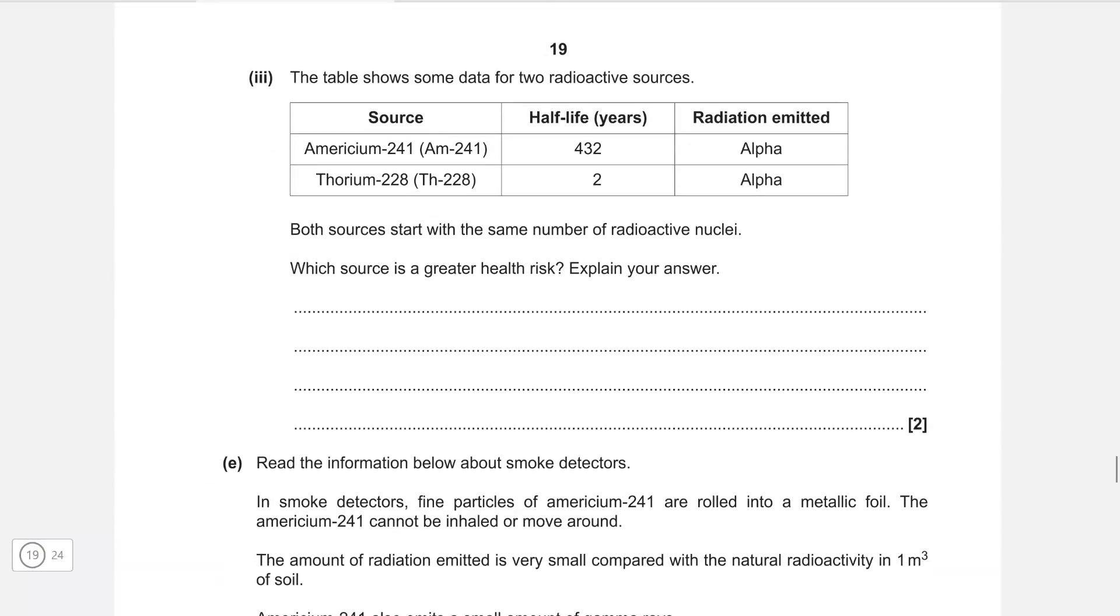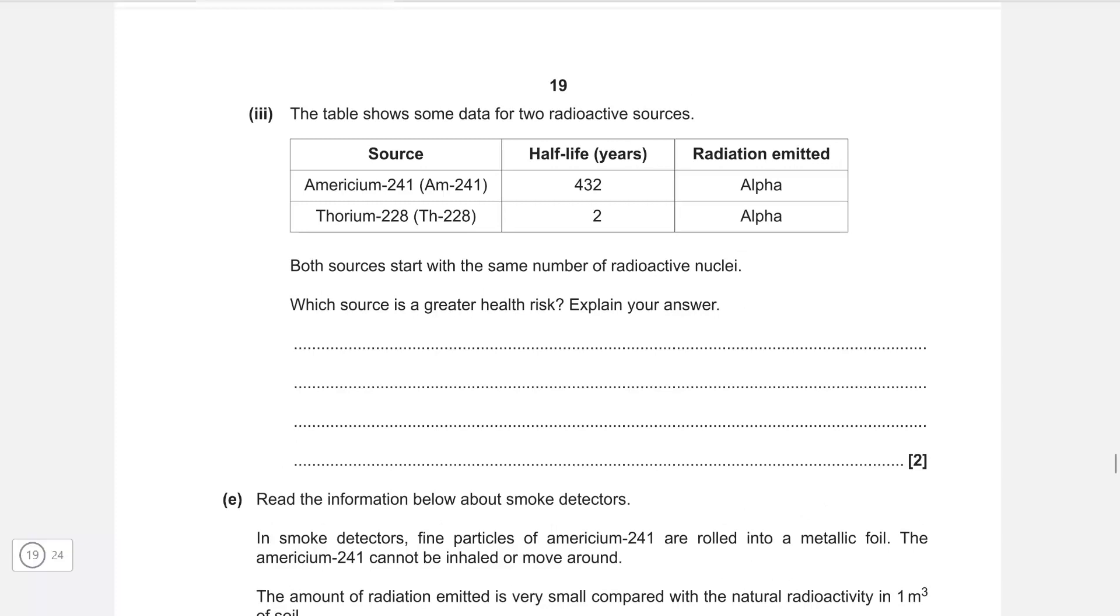We have a table which shows some data for two radioactive sources. Both start with the same number of radioactive nuclei. Which source is a greater health risk? Explain your answer. Thorium will clearly be the greater risk. Thorium-228 will be the greater risk. We need to explain our answer. If it has a shorter half-life, a much shorter half-life will mean a much higher activity.